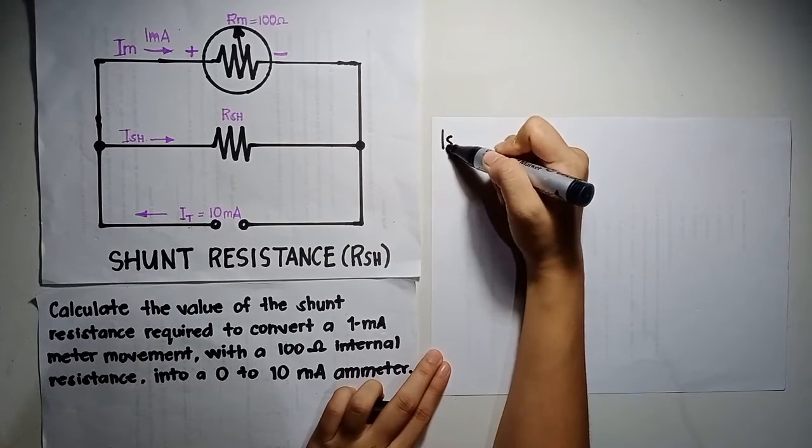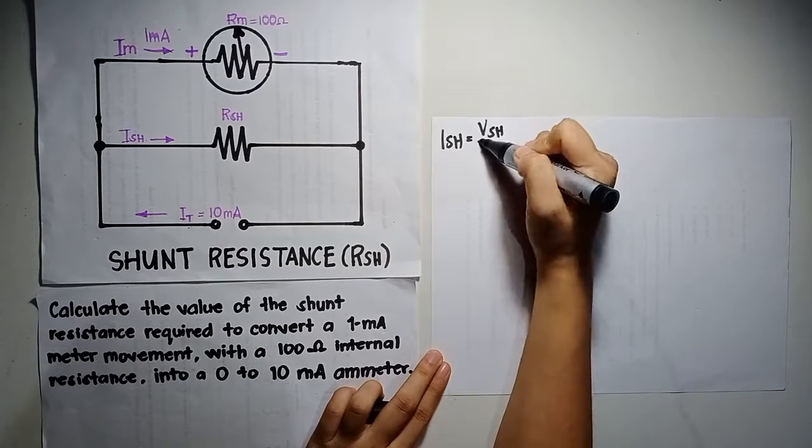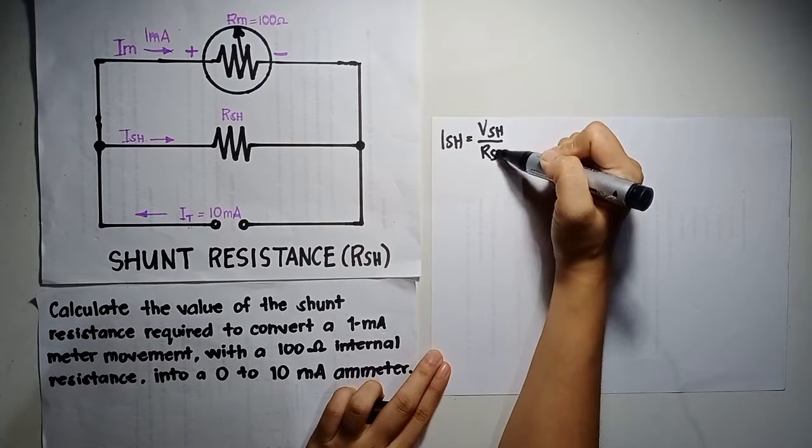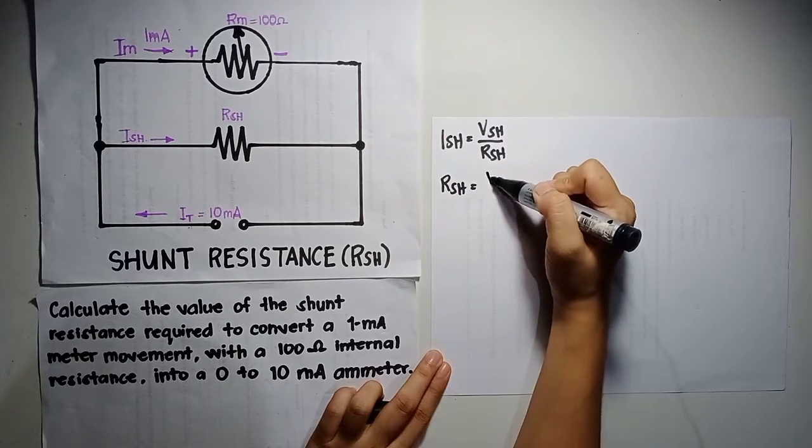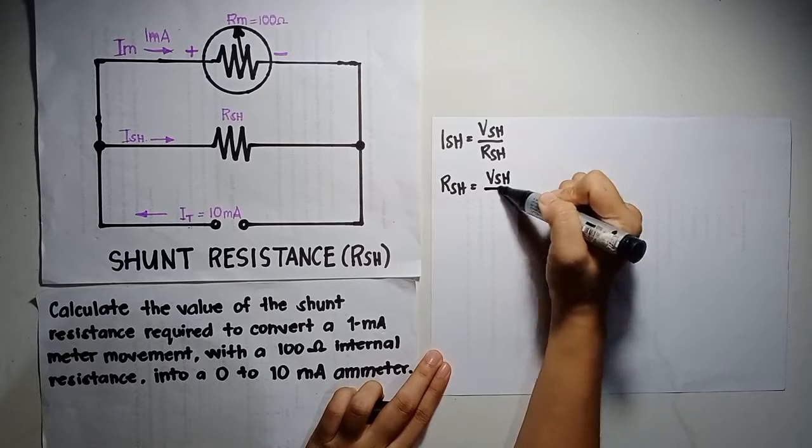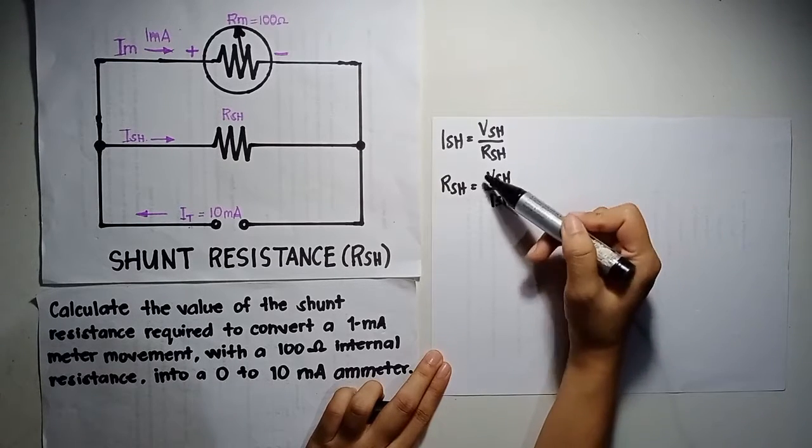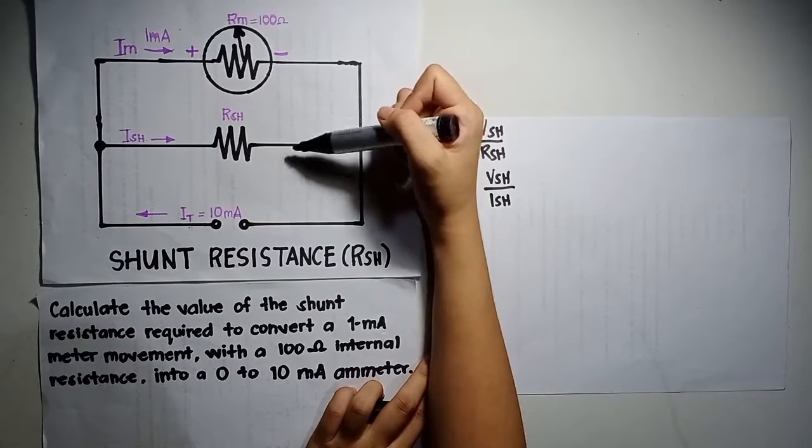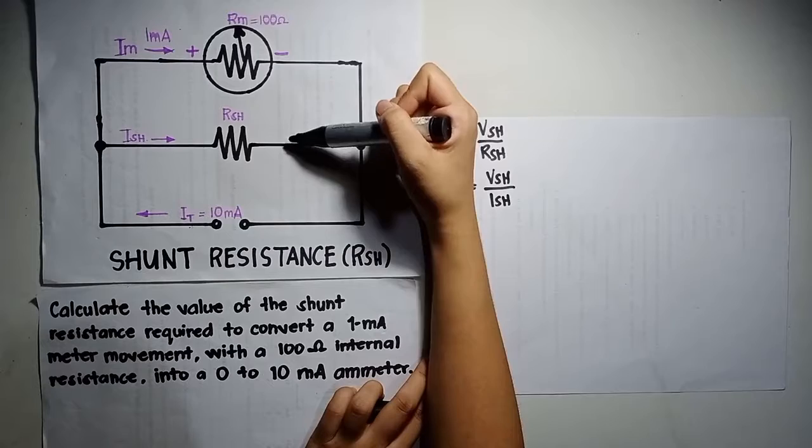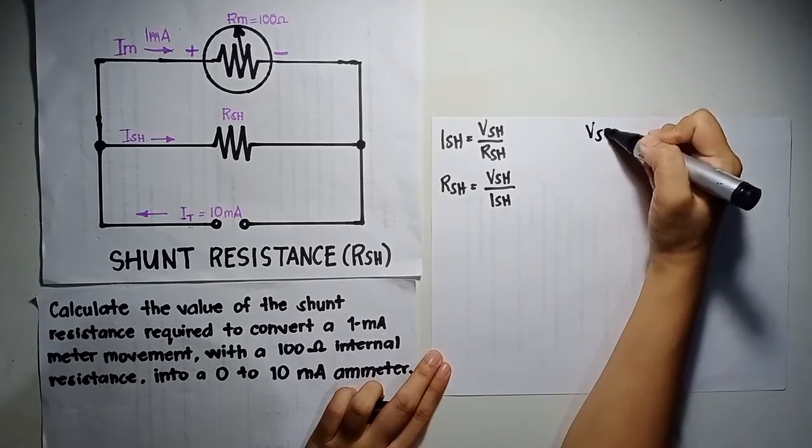Using Ohm's law, which is Ish equals Vsh over Rsh, we can derive the formula of Rsh, which is equal to Vsh over Ish. Since we don't have the value of Vsh, looking at the circuit, we can determine that Rsh is parallel with Rm. Therefore, we can conclude that their voltages are equal.